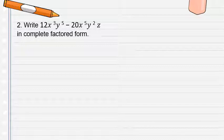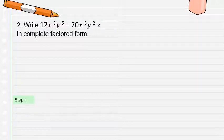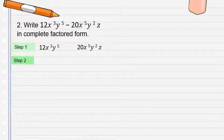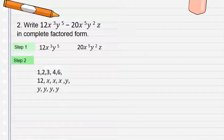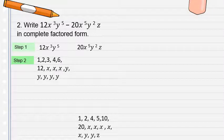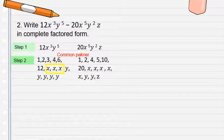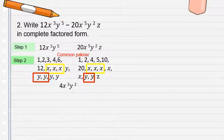Example 2: Write 12x cubed y fifth minus 20x fifth y squared z in factored form. Step 1 identifies the two terms: 12x cubed y fifth, and 20x fifth y squared z. Step 2: find the GCF. List all factors of 12 and 20. The GCF of the numerical coefficients is 4.